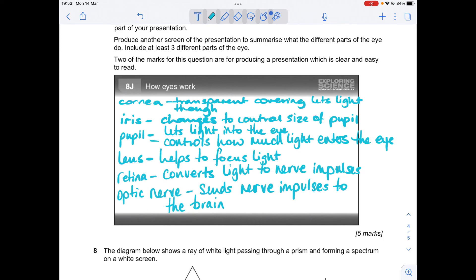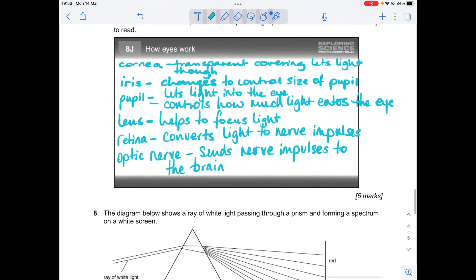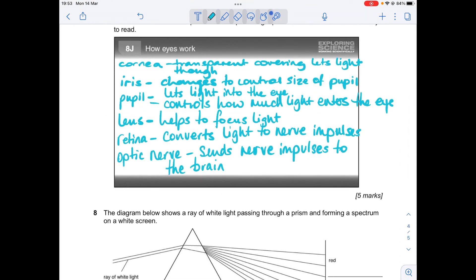Okay, so you only had to pick three parts but I've written every single part that was on the diagram. The cornea is the transparent covering that lets light through. The iris changes to control the size of the pupil. The pupil lets light into the eye. The lens helps to focus light. The retina converts light to nerve impulses. And the optic nerve sends nerve impulses to the brain.